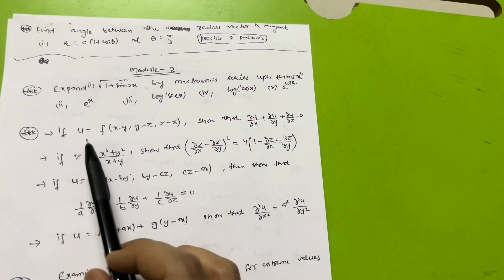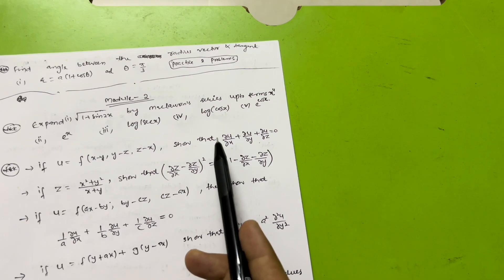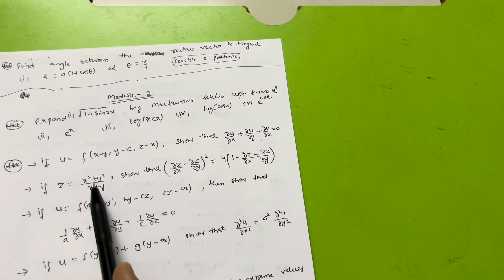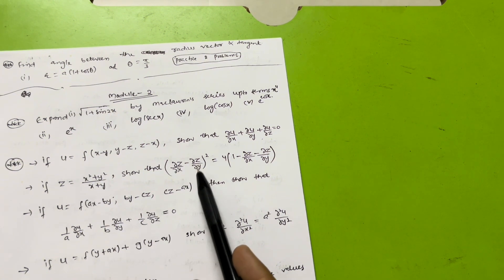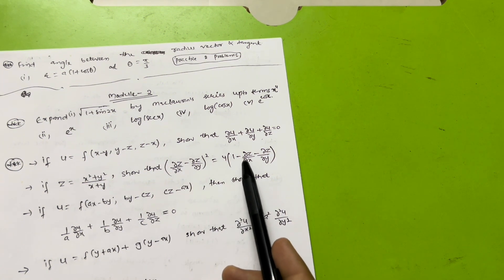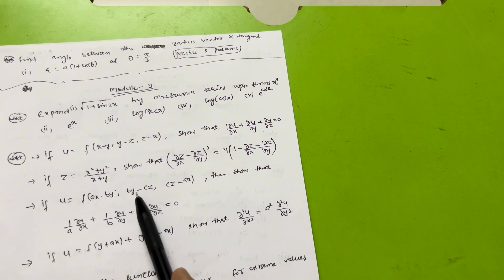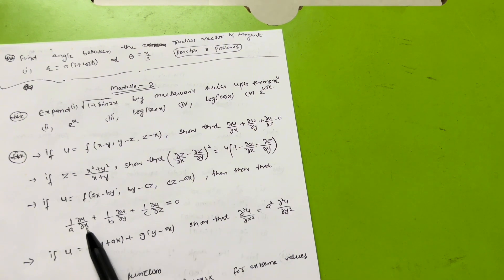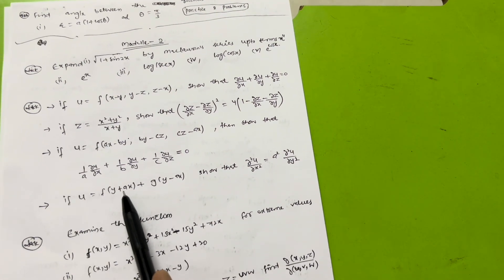Next, if u = f(x − y, y − z, z − x), show that ∂u/∂x + ∂u/∂y + ∂u/∂z = 0. If z = (x² + y²)/(x + y), show that (∂z/∂x − ∂z/∂y)² = 4(1 − ∂z/∂x − ∂z/∂y). If u = f(ax − by, by − cz, z − ax), show that (1/a)∂u/∂x + (1/b)∂u/∂y + (1/c)∂u/∂z = 0. These are super important ones.